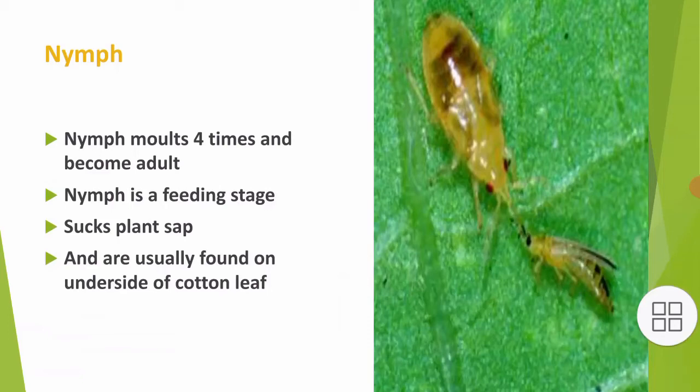The nymph molts four times and becomes an adult. The nymph is a feeding stage; it sucks plant sap and is usually found on the underside of cotton leaves.